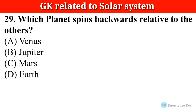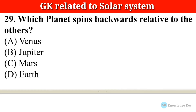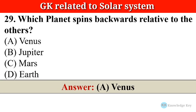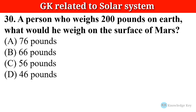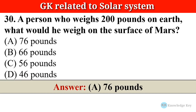Question number twenty-nine: Which planet spins backwards relative to the others? The correct answer is option A — Venus. Question number thirty: A person who weighs 200 pounds on Earth — what would they weigh on the surface of Mars? The correct answer is option A — 76 pounds.